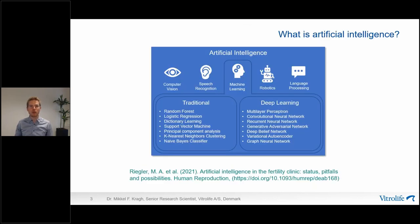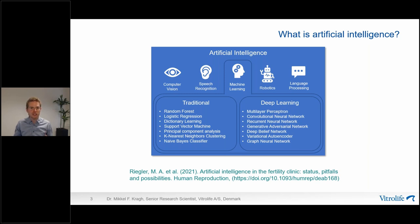I'd like to start with a brief introduction to what artificial intelligence is. An illustration from a review paper by Michael Riegler and colleagues shows how AI is used across domains such as computer vision, speech recognition, robotics, and language processing. What's common to all these domains is that they typically use machine learning — a data-centric approach to classify or predict things like embryo quality. Machine learning algorithms automatically learn patterns from data and use those patterns to generalize to new examples.